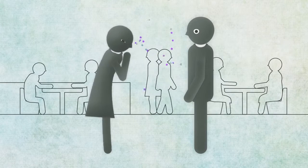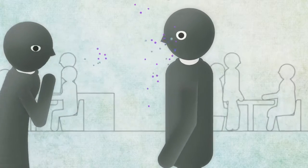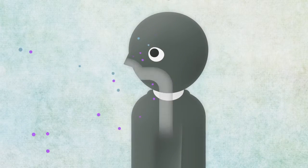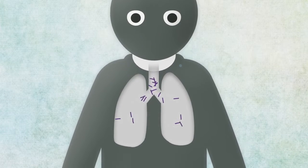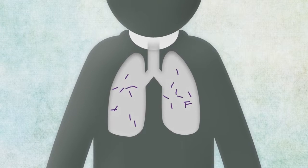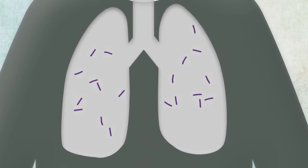When someone with tuberculosis coughs, they expel tiny drops of saliva full of bacteria that can infect people nearby. The bacteria then continue their journey down the respiratory tract and into the lungs. That person is then infected with TB.